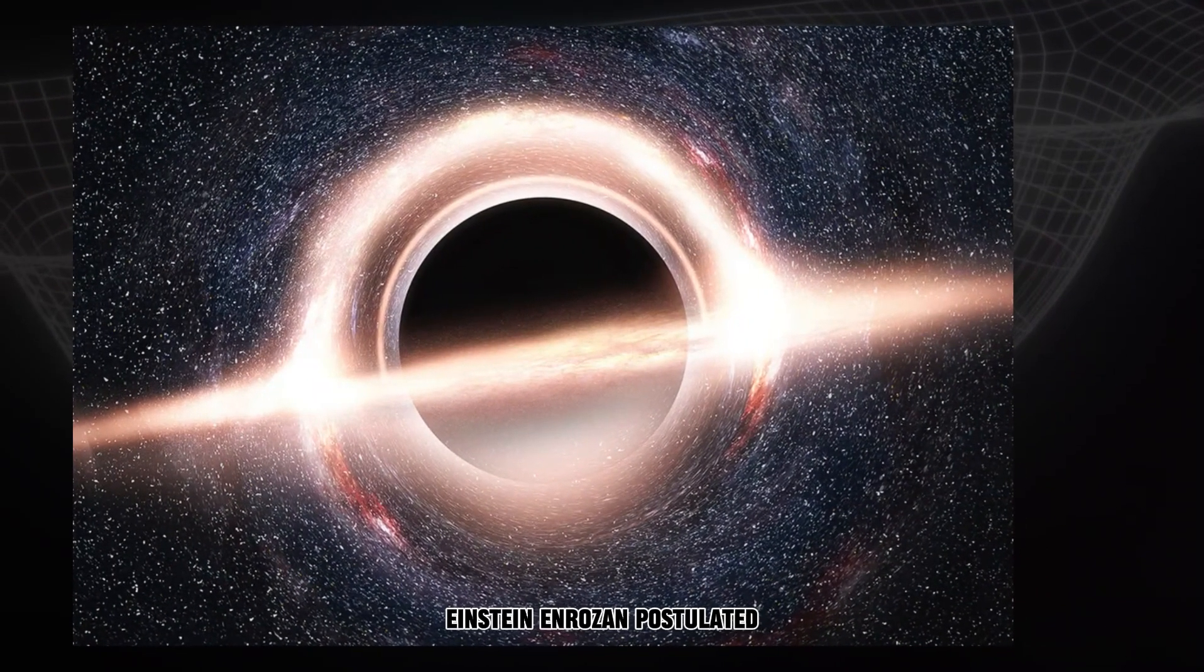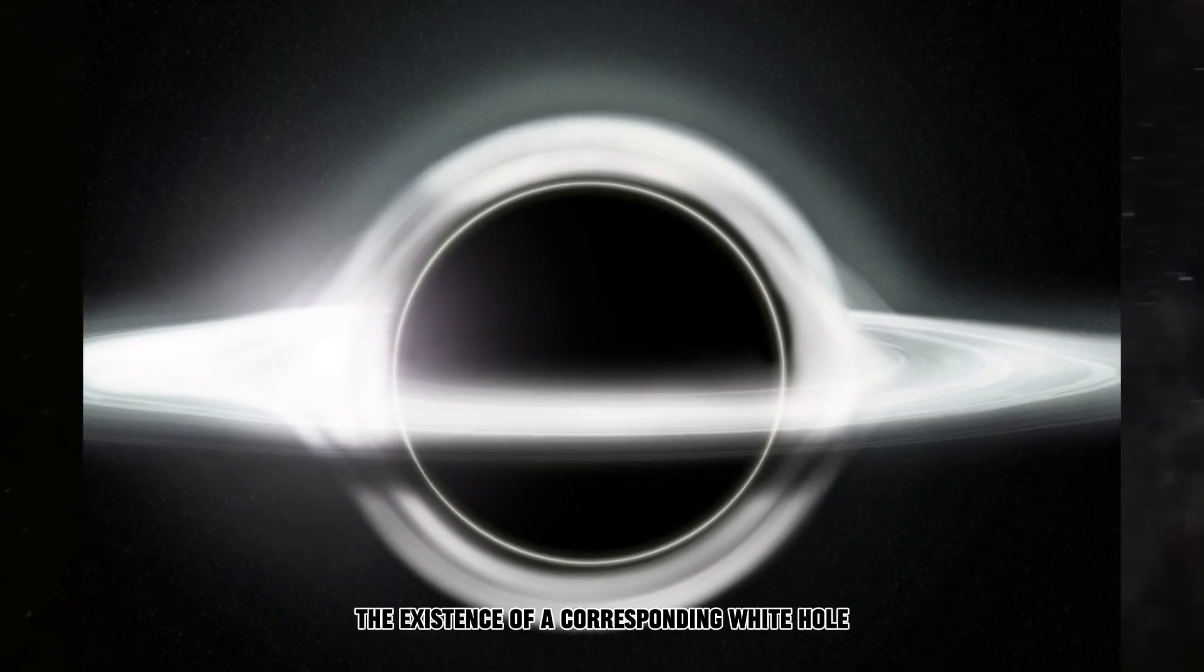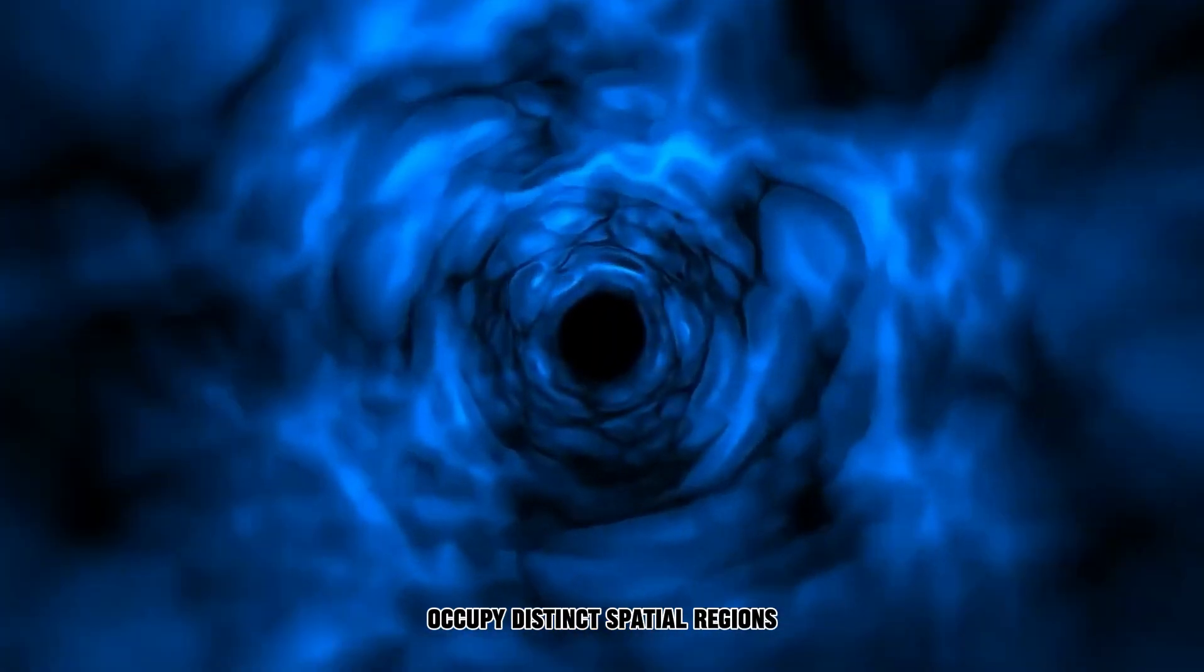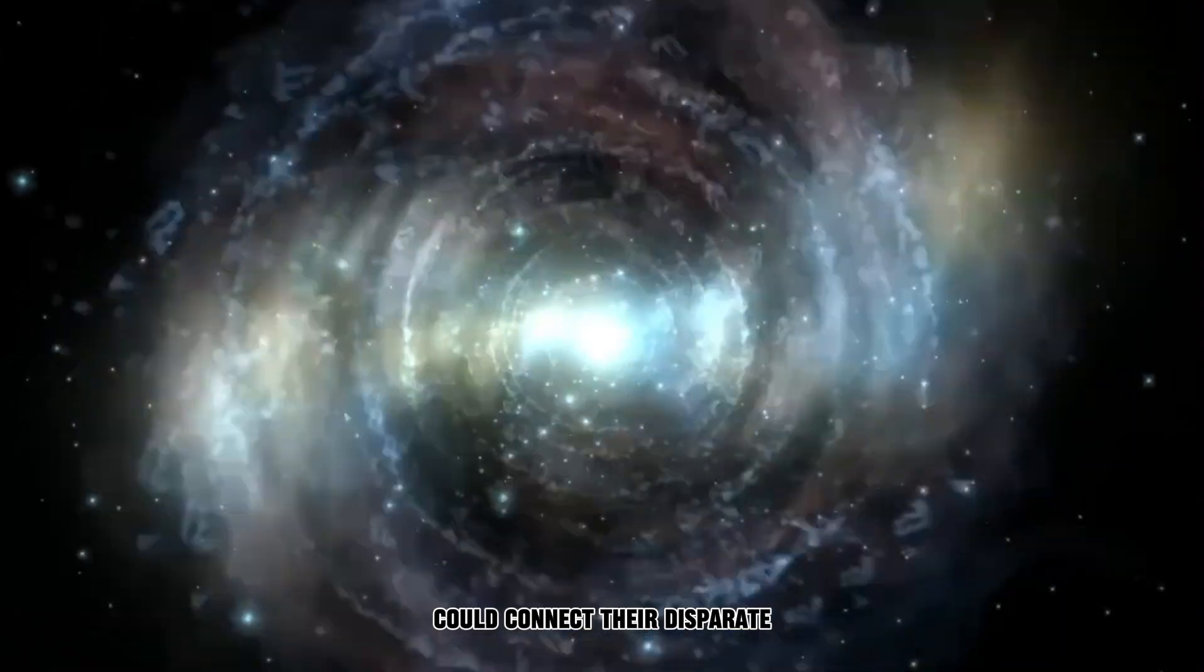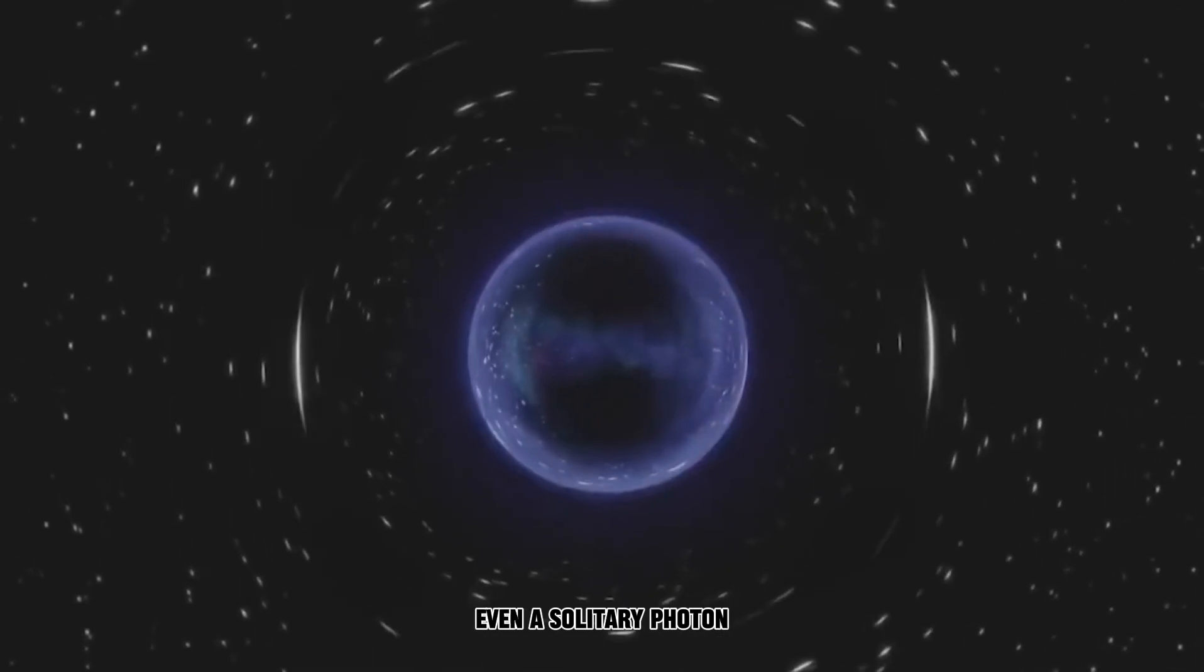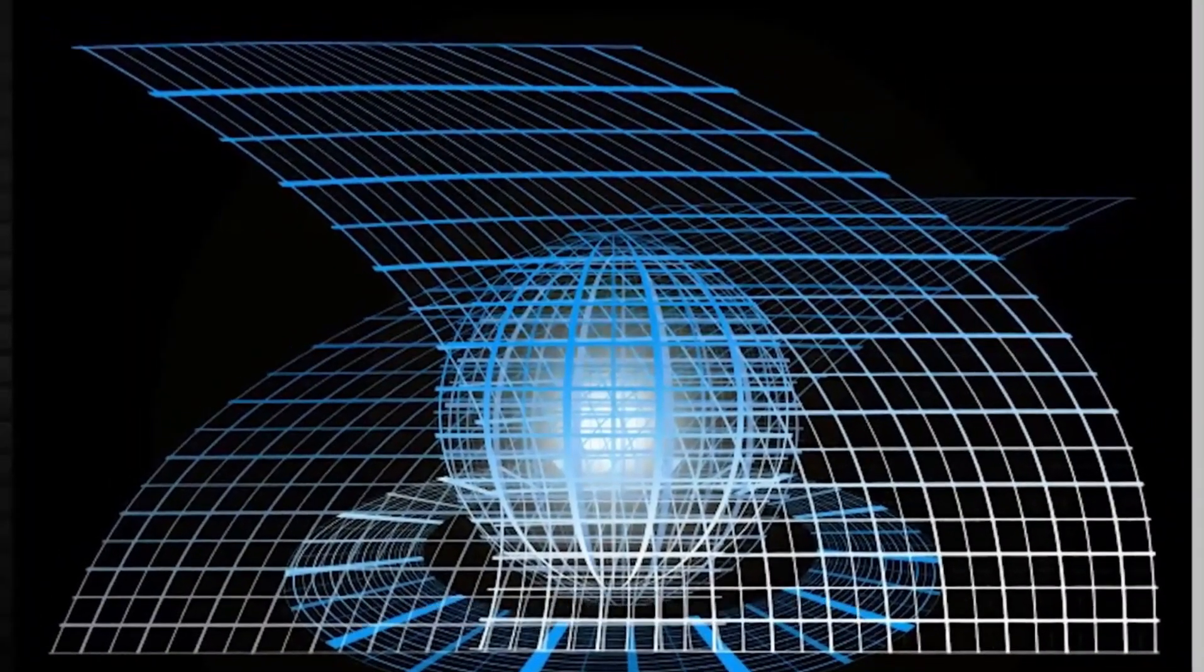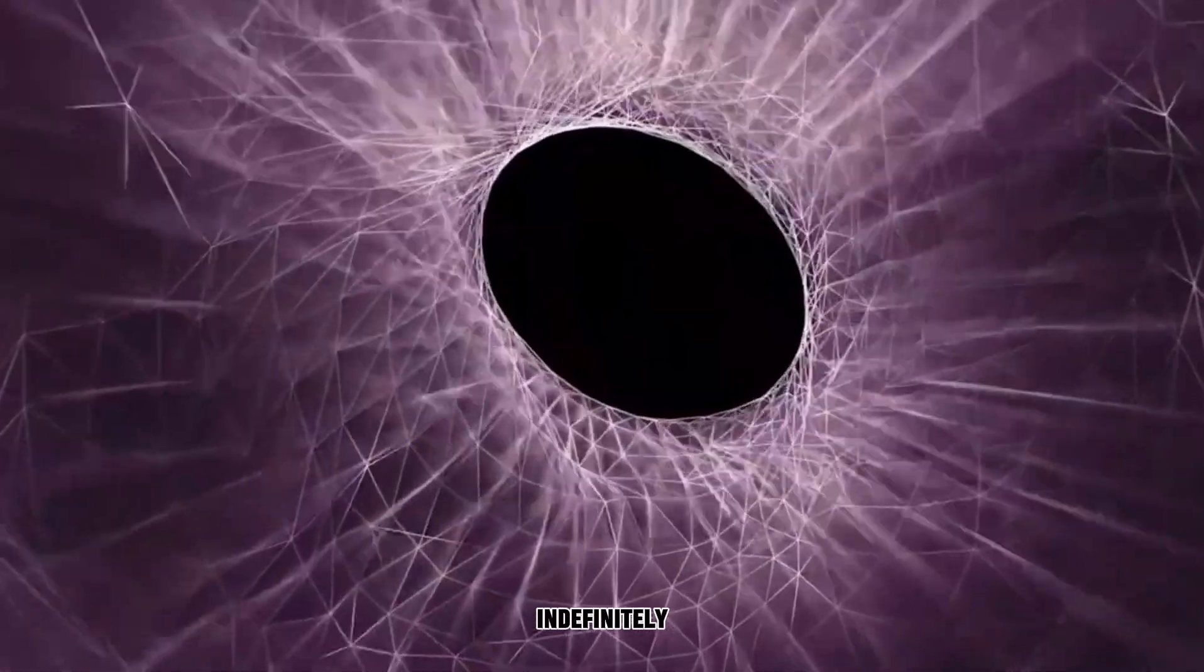For every black hole, Einstein and Rosen postulated the existence of a corresponding white hole located elsewhere in the universe. As these holes occupy distinct spatial regions, a tunnel known as a wormhole could connect their disparate ends. However, the stability of such a tunnel posed a challenge. Even a solitary photon or particle of light traversing the wormhole could introduce an immense amount of energy, leading to a catastrophic collapse, thus trapping anything inside indefinitely.